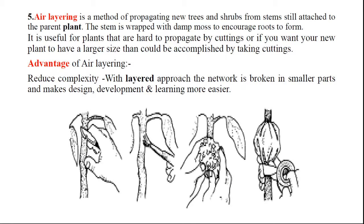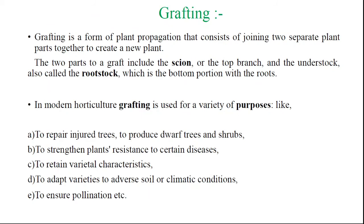The last important type of layering is air layering, also known as gutty. In air layering or gutty, instead of the branch coming toward the soil, the soil goes toward the branch. Select a healthy, disease-free branch, then remove the phloem portion of the branch about one inch in a circular manner. Cover the wound with sphagnum moss, water regularly, and after a few days the sphagnum-covered area of the branch develops a root system. That branch is then cut from its mother plant and developed as a new plant.